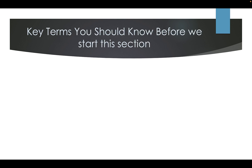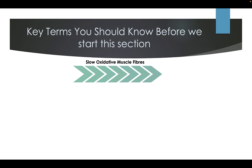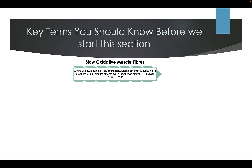Key terms you should know before we start this section. Slow oxidative muscle fibres: a type of muscle fibre rich in mitochondria, myoglobin and capillaries, which produces a small amount of force over a long period of time. It does not fatigue easily.